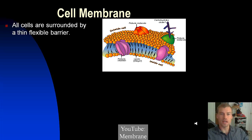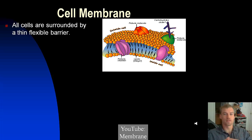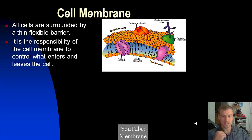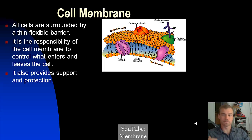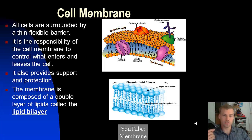The cell membrane — remember, all cells are surrounded by a thin, flexible barrier called the cell membrane. Prokaryotic cells and eukaryotic cells both have this. It is responsible for controlling what is entering and leaving the cell, and it also provides some support and protection.